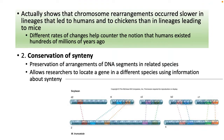Another concept is conservation of synteny, which means that DNA segments are preserved in related species. We can find a gene in one species and compare it to a gene in another species to gather information about what that gene does. You can actually swap genes out between species and it would be just fine.